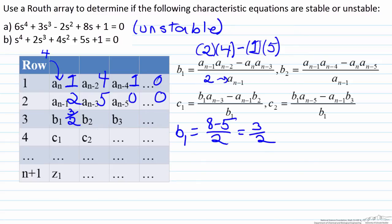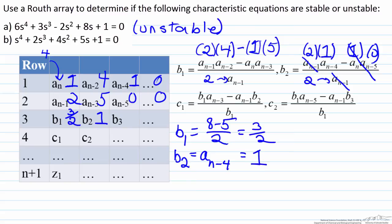We can then do a very similar thing to solve for b_2. b_2 is just the a_{n-4} term which is just one. b_3 is going to be zero. The reason why is because it would be asking for the n minus six and n minus seven terms which would be here, which we know are zero. So therefore we know that b_3 is going to be zero.